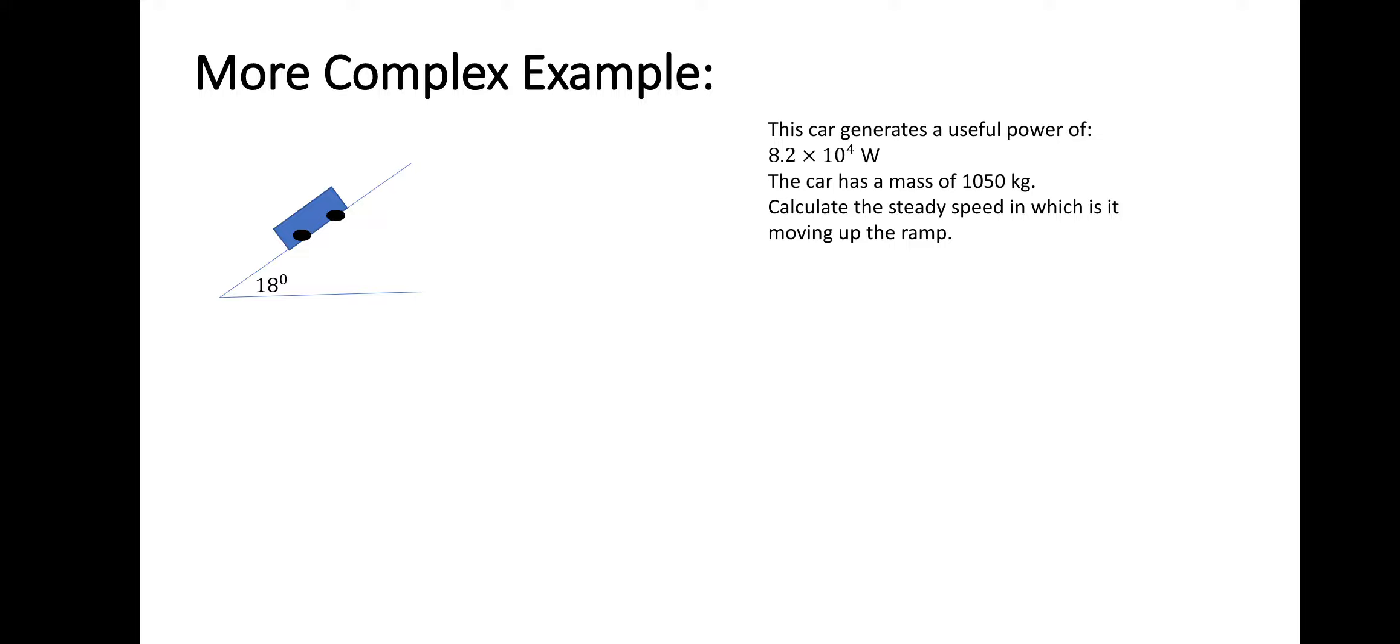If you want to have a go at this, please do, just pause the video. This car generates a useful power of 8.2 times 10 to the 4 watts. We've got the car's mass and we know that it's traveling at a steady speed up the ramp. We need to use P equals FV. But to use F, we need to know the force that's parallel to the ramp. So we need to use the technique we've just learned. The weight acts down. The mass of this car is 1,050 kilograms, so we need to multiply that by 9.81 to give us the weight, which is 10,300.5 Newtons.